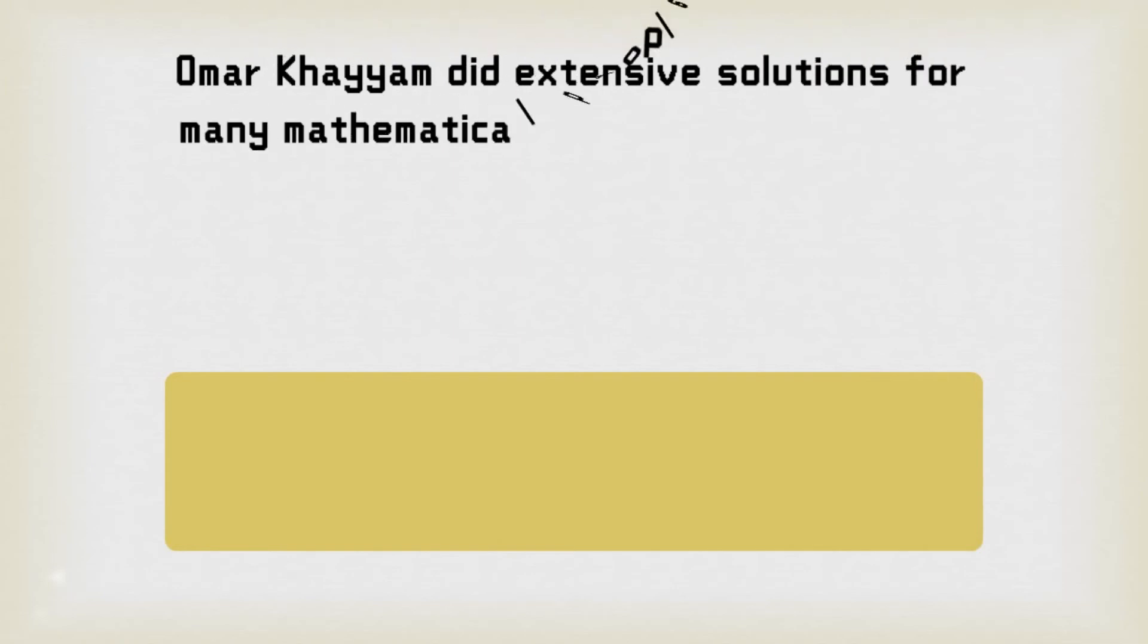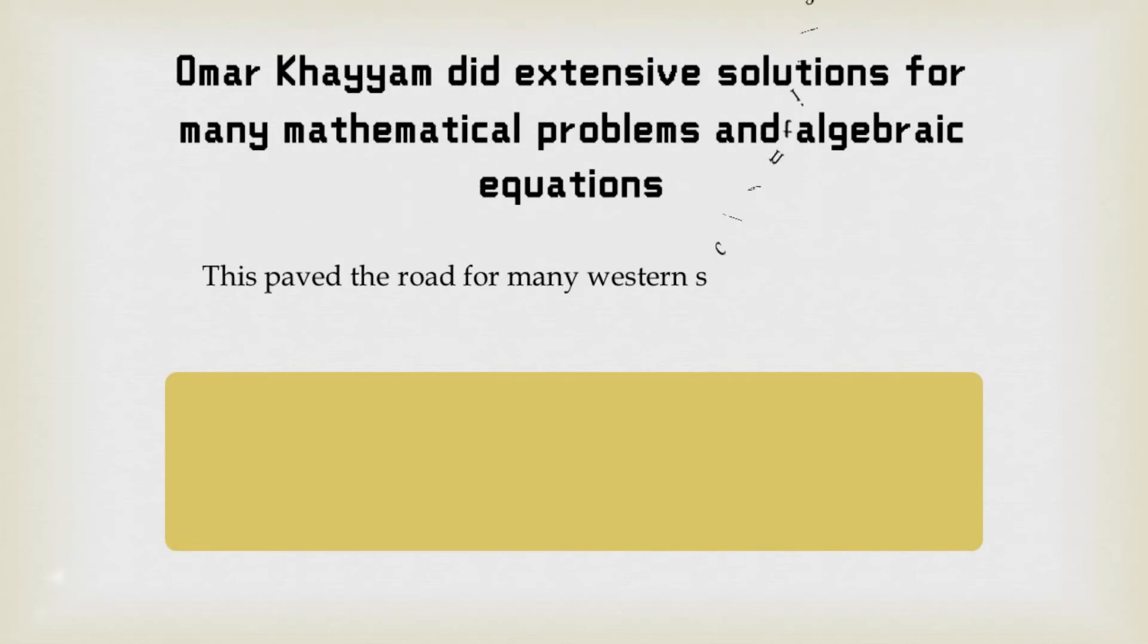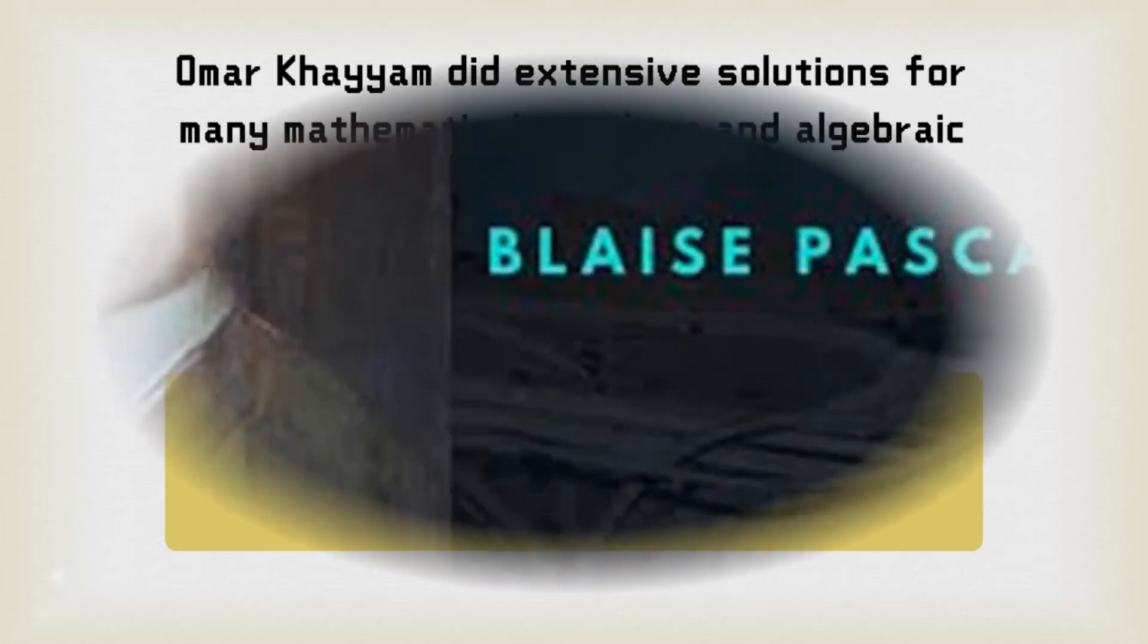Omar Khayyam did extensive solutions for many mathematical problems and algebraic equations. These efforts of Omar Khayyam paved the road for many Western scientists, like Blaise Pascal, Sir Isaac Newton, who came hundreds of years after Omar Khayyam.